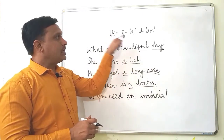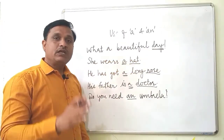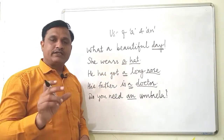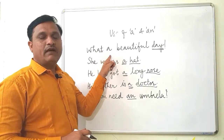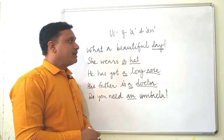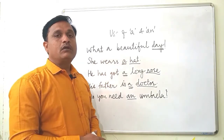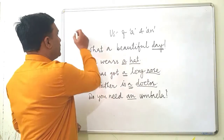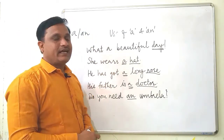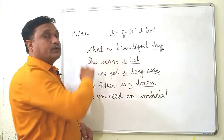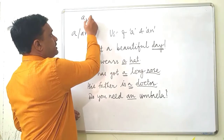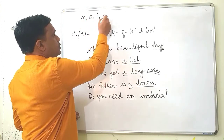We use article A or AN for singular countable nouns. Wherever we have a countable noun that is singular, we have to use article A or AN. Now basically when do we use A versus AN — that's our question.